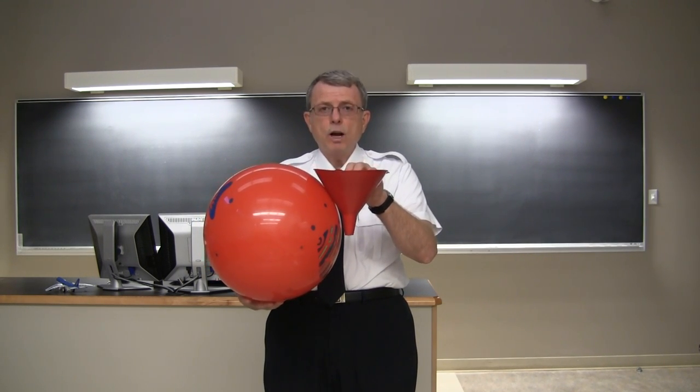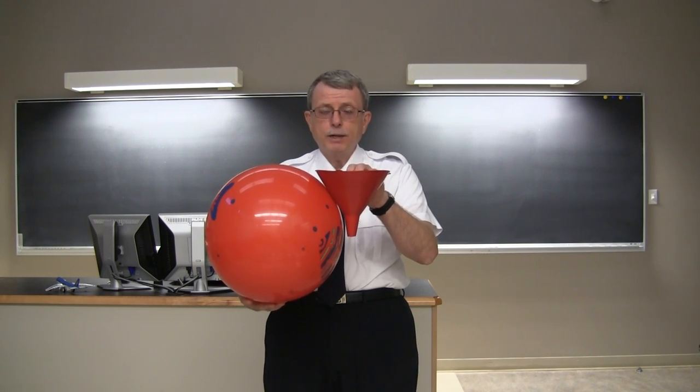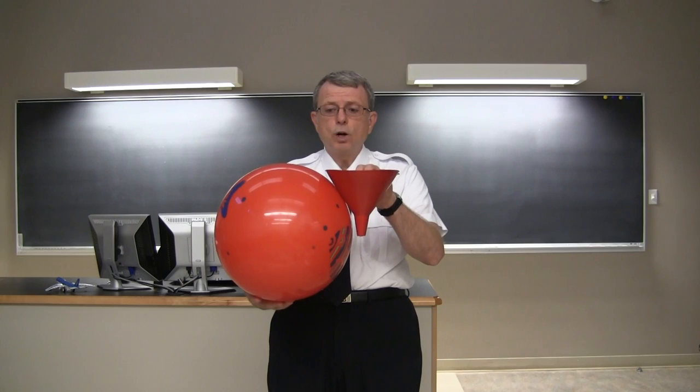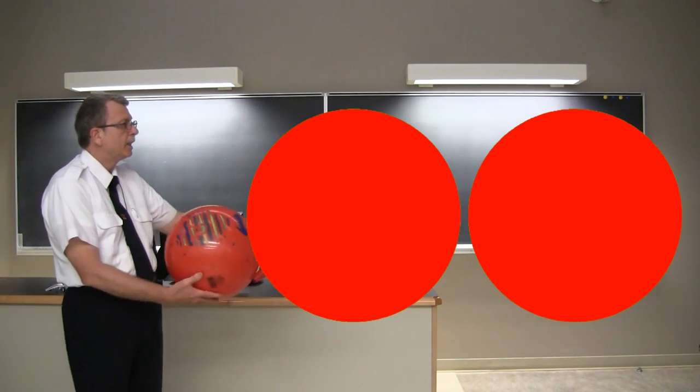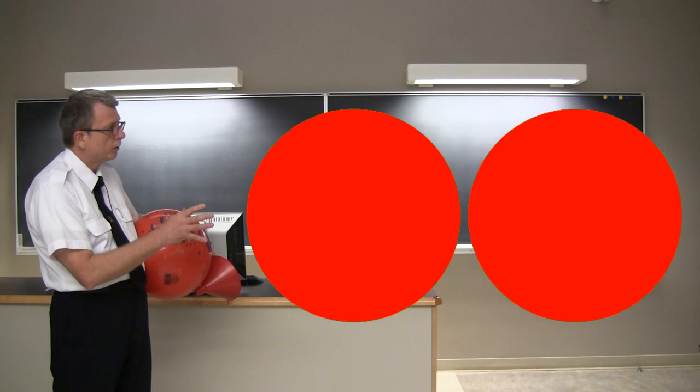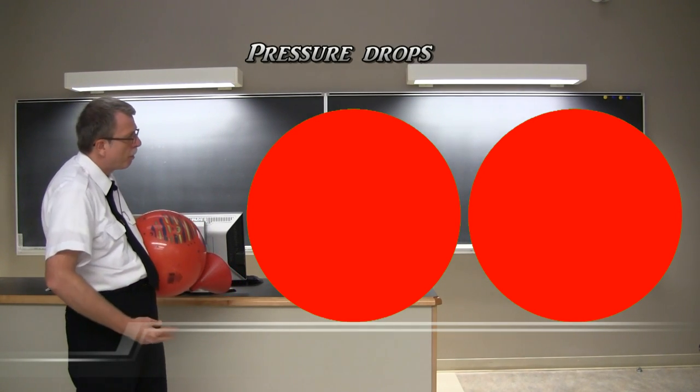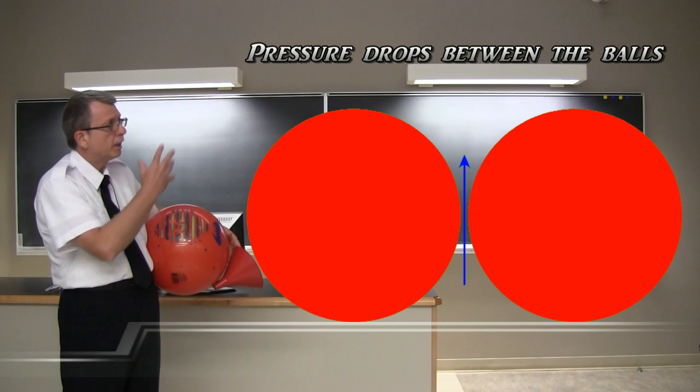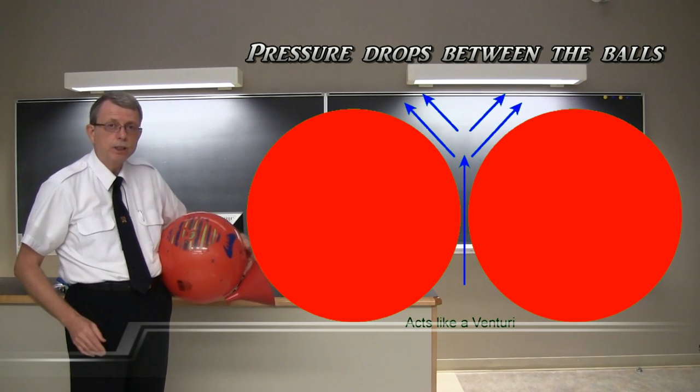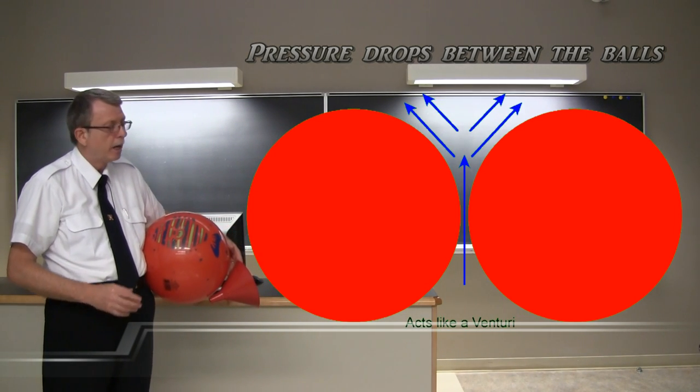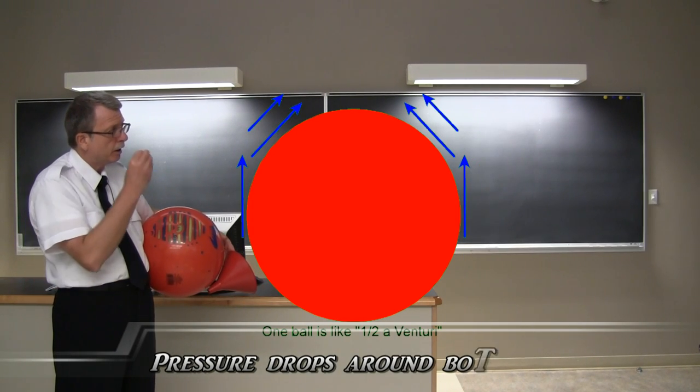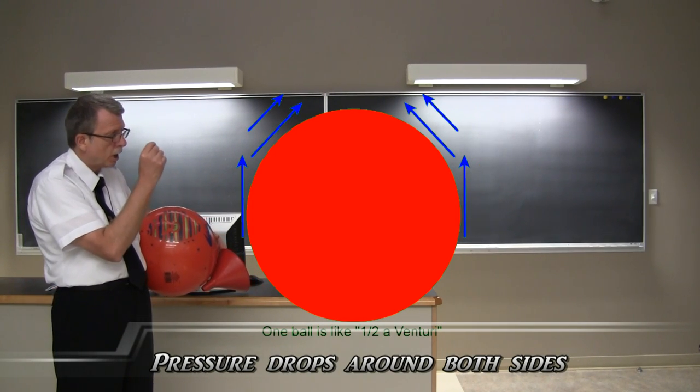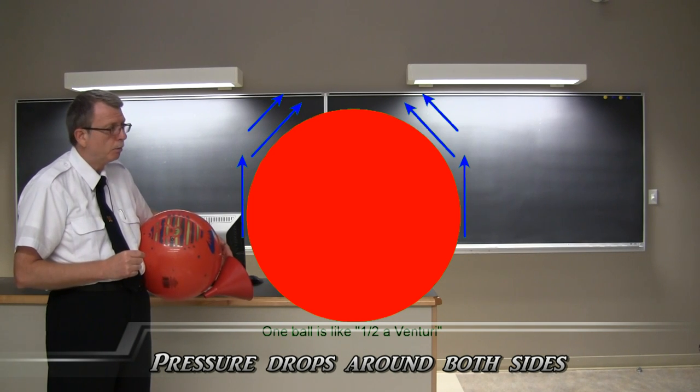Now this is even more obvious if we had two balls. Since I don't have three hands, I decided to draw it in an animation. So in this animation, there are two balls and you can imagine the air flowing up between them and expanding into that funnel shape region above. And so it's very easy to see in this case that there's going to be a low pressure along the sides of the ball.